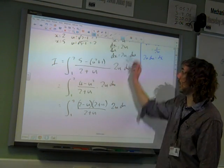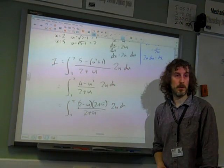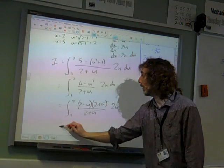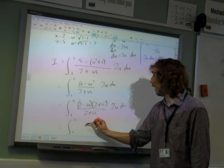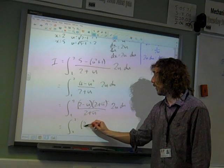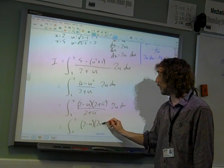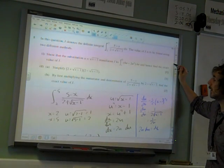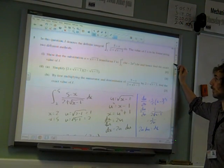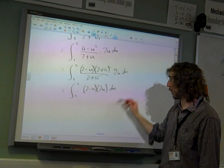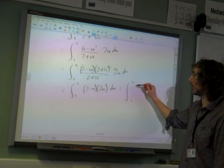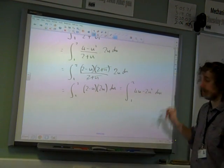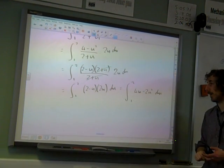So the 2 plus u cancels with that 2 plus u that was down there. Leaving us with the integral from 1 to 2 of 2 minus u times 2u du. And I've lost track of what I was supposed to be showing. Supposed to be showing it was 4u minus 2u squared. So there we go. That's what we've got. Which is the integral from 1 to 2 of 4u minus 2u squared du. And there we are.